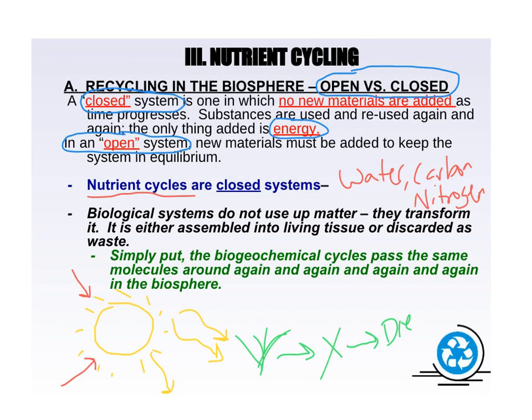All that means is we have all the water on Earth we'll ever have — we cannot make more water, more carbon, or more nitrogen. We have all that we're ever going to have. So in order for life to not stop, we've got to recycle it and use these nutrients over and over again. We're drinking the same water today that dinosaurs drank 65 million years ago. In a closed system like nutrients, no new materials are being added to the biosphere. In open systems, new sunlight comes from the sun every single day.